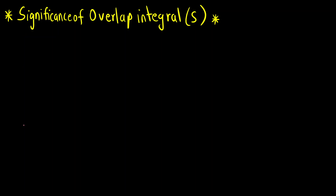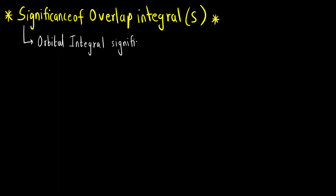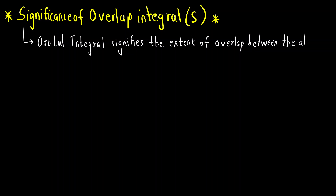Before solving this question, let us first understand what is the significance of the orbital overlap integral S. The orbital overlap integral signifies the extent of overlap between the atomic orbitals of the two atoms that are forming the bond.